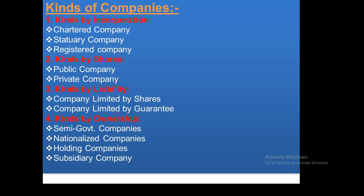In Pakistan, examples of statutory companies include NIT Company, State Bank, PICIC, Investment Corporation of Pakistan (ICP), IDBP (Industrial Development Bank of Pakistan), ADBP, and Pakistan Steel. These are registered companies. For registered companies, private companies and public companies are the main forms.